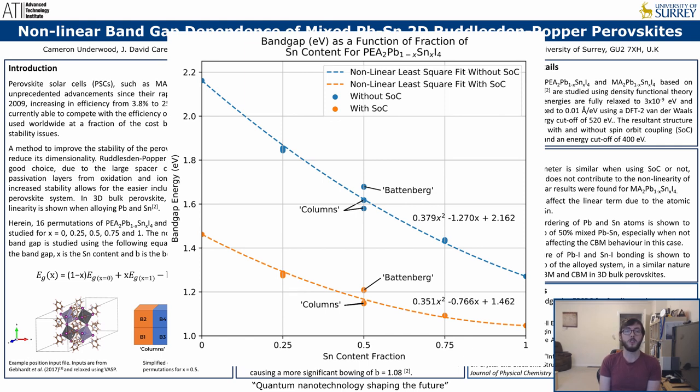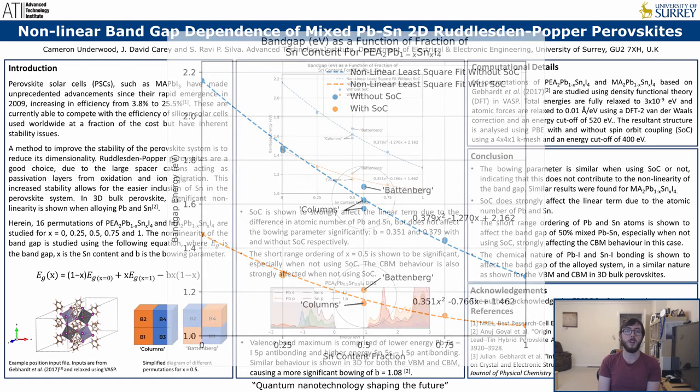The short-range ordering of lead and tin atoms is also shown to be important to consider, with the bandgap being dependent on this, especially when not using spin-orbit coupling.